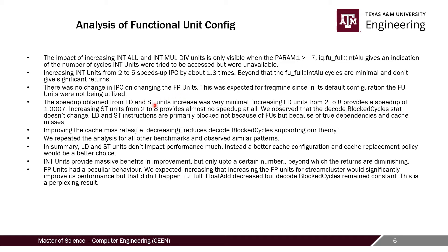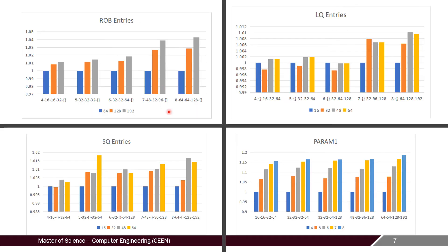The load and store units did not provide any improvement at all. After analysis, this seems to be because although the load and store instructions have an increased number of available units, the true dependencies between them and cache miss rates play a major role in limiting benefit. From the graphical representation for Freqmine, load and store queue entries provide very minimal speedup, while the majority of speedup comes from changing the window size — from 1.5 to 1.2 IPC as window size goes from 4 to 8. The impact of ROB entries is more prominent when window size is around 7 to 8.